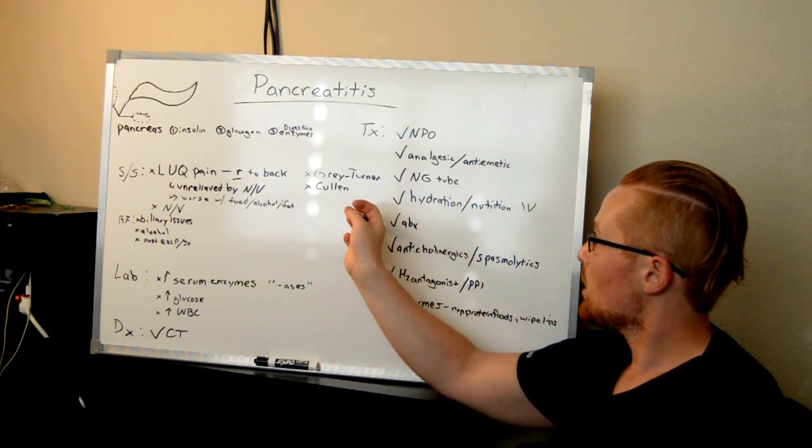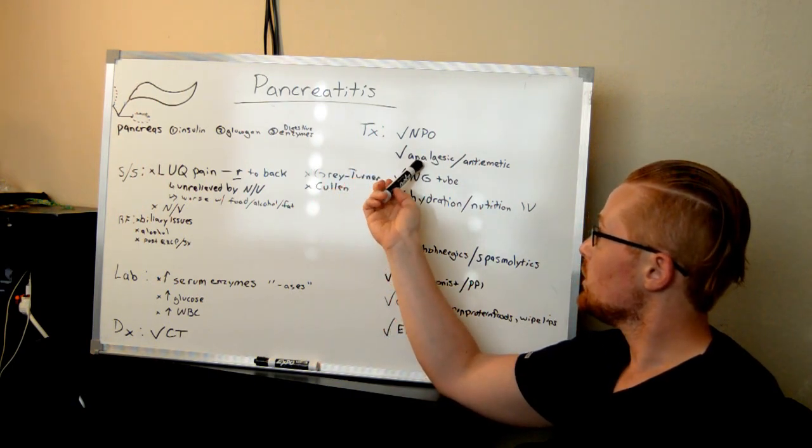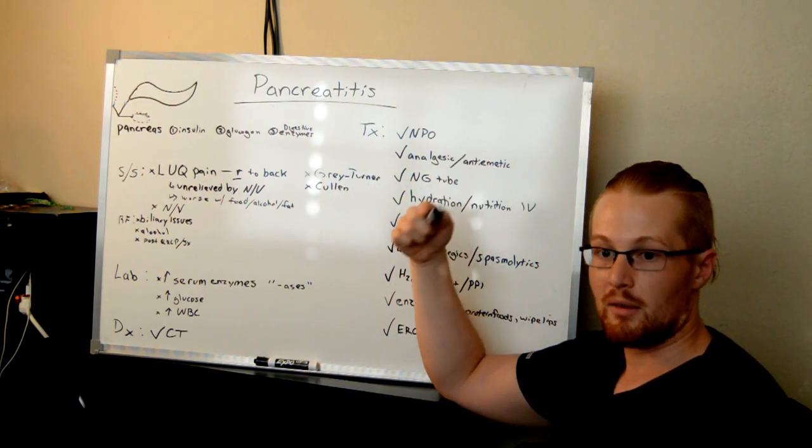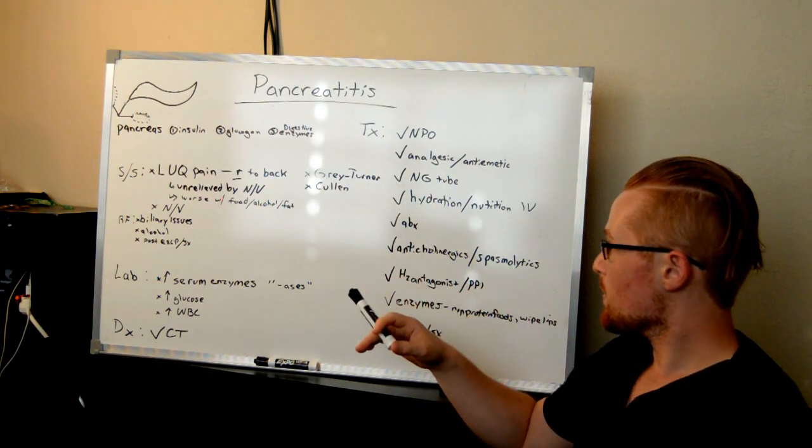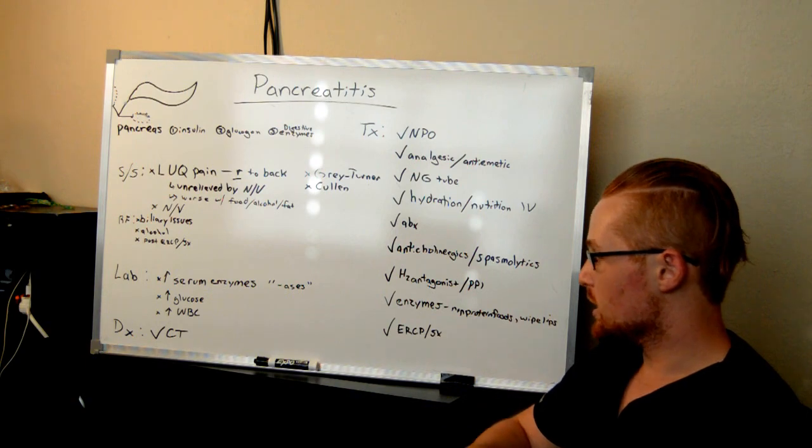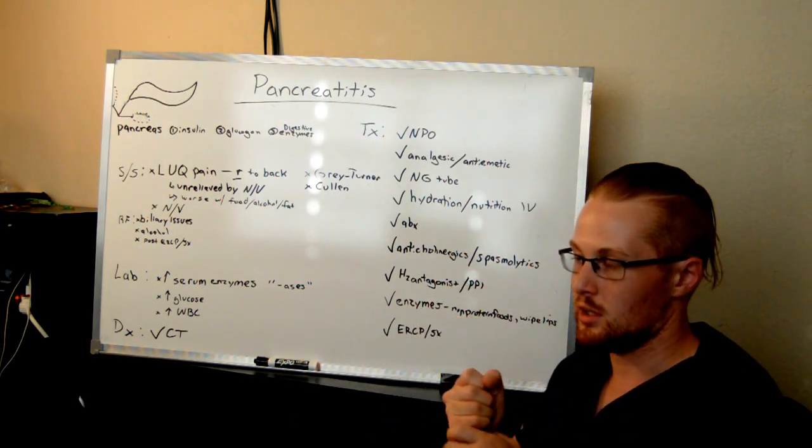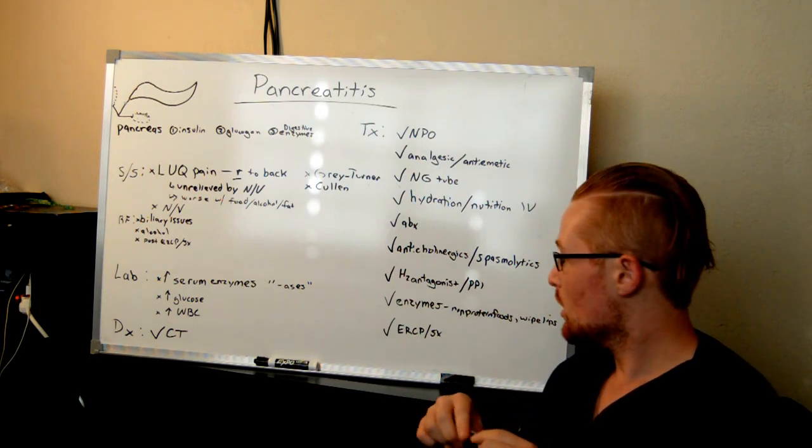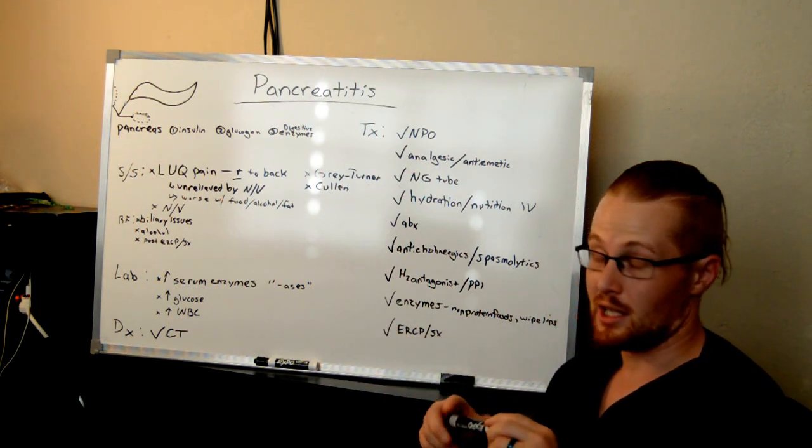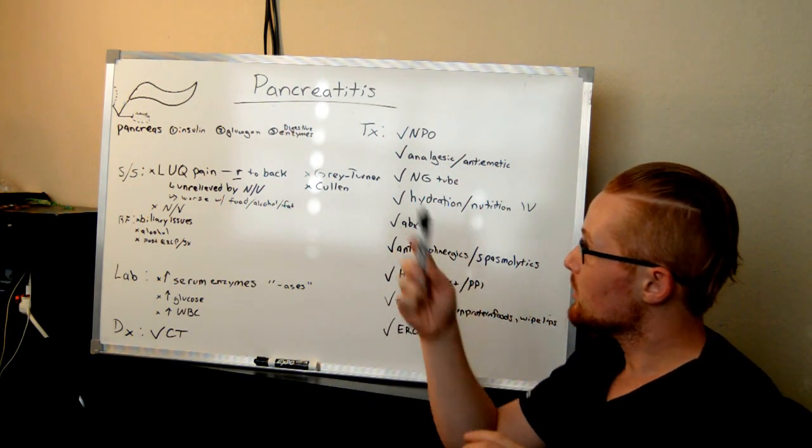These patients may need antibiotics if there is an infection that is the cause. Definitely, they're going to need analgesics and antiemetics to keep them from having pain and nausea and vomiting. And if it doesn't heal on its own, the next treatment is surgery or ERCP, in which case they're going to go in and take out the obstruction, which may include taking out the gallbladder if that was the cause of the obstruction. So this is pancreatitis.